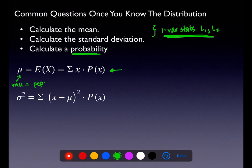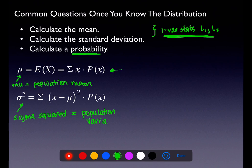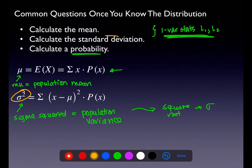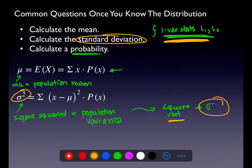The mean formula that runs when we do one-variable stats L1 L2 uses mu — the population mean — which is a parameter. The variance formula gives sigma squared, which is the population variance — not the standard deviation. To get the standard deviation, you take the square root of the variance to arrive at sigma, the population standard deviation. When you use one-variable stats L1 L2, it directly gives you the standard deviation.